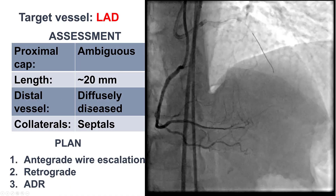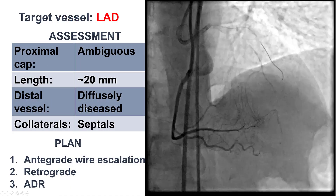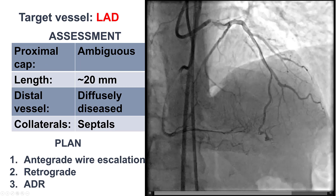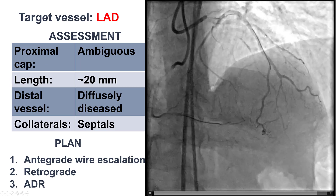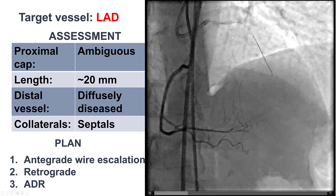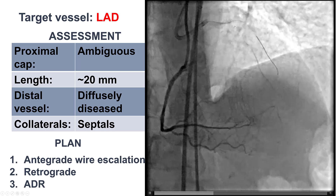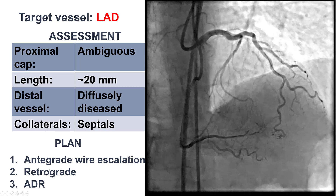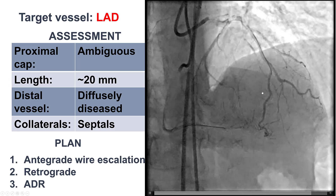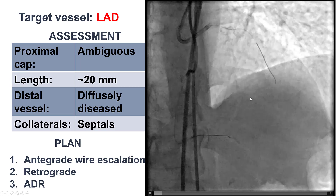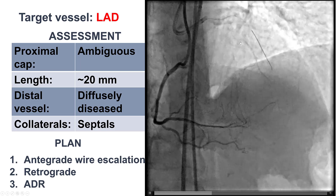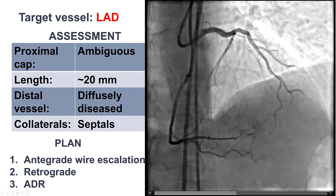Based on this anatomy, we decided to do intravascular ultrasound to confirm the location of the proximal cap, and then if confirmed, do antegrade wire escalation. If that didn't work, go retrograde through the septal collaterals, and if that didn't work, do antegrade dissection and re-entry.